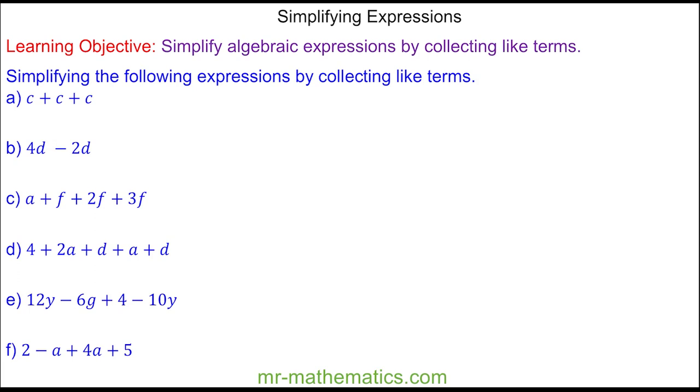Welcome to our lesson on simplifying expressions by collecting like terms. For question a, we have c add c add c. As a sharp multiplication, we can write this as 3 times c. In algebra, we do not write the times symbol because it can be confused with the x symbol, so instead we write this as 3c.